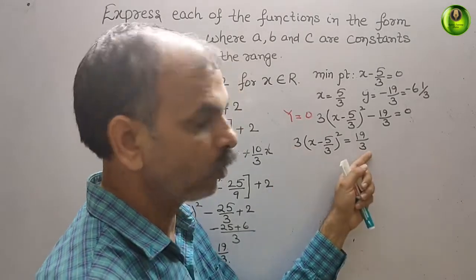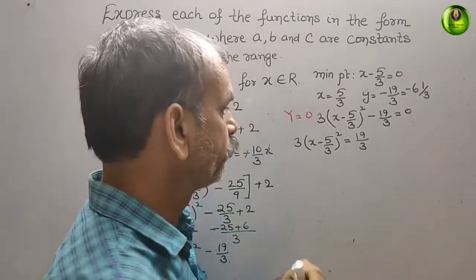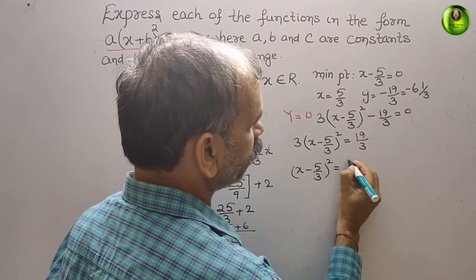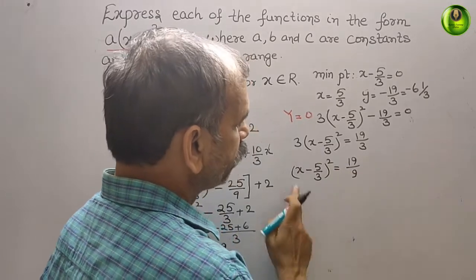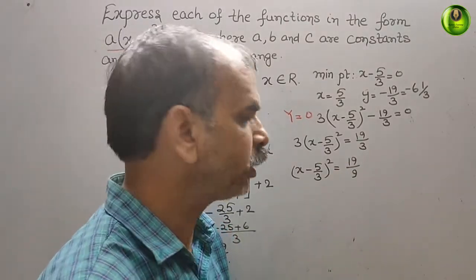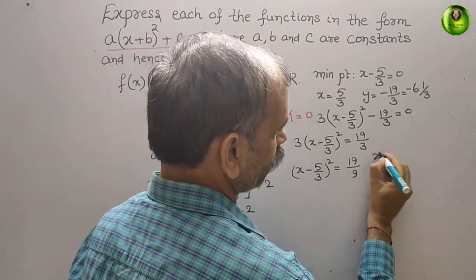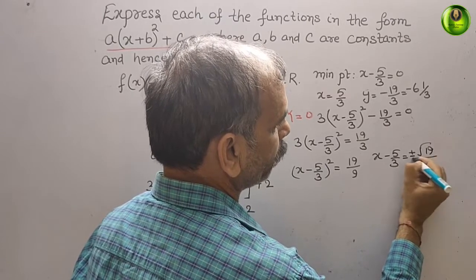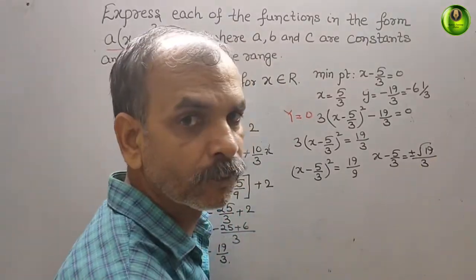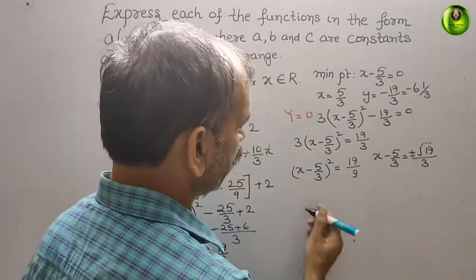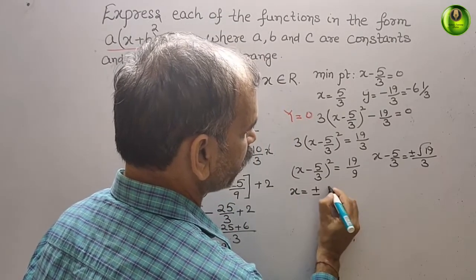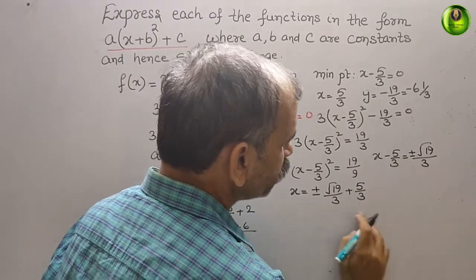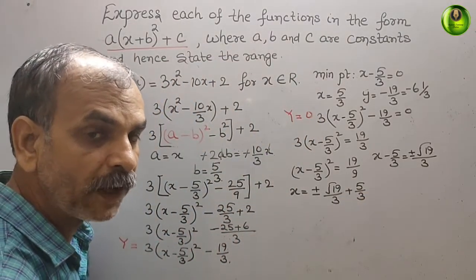Bringing the 3 to the denominator: (x - 5/3)² = 19/9. Therefore x - 5/3 = ±√(19/9) = ±√19/3. So x = 5/3 ± √19/3.